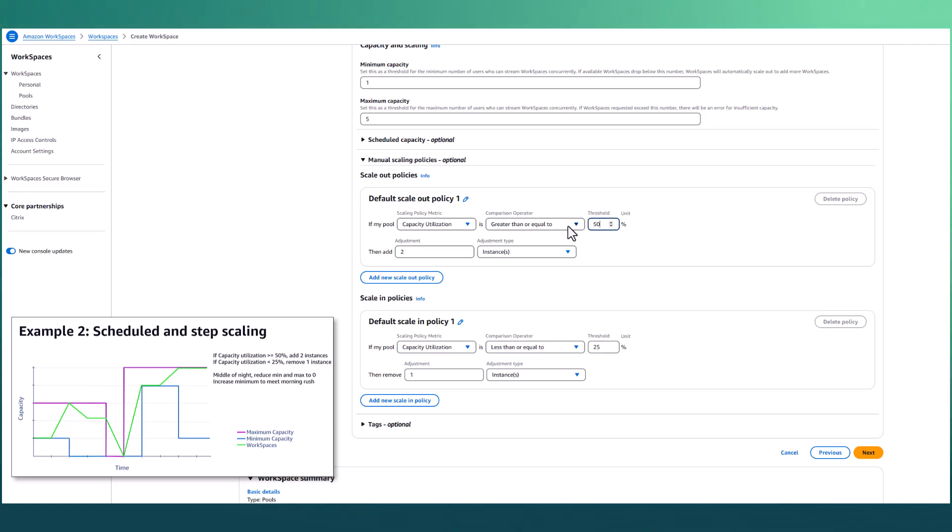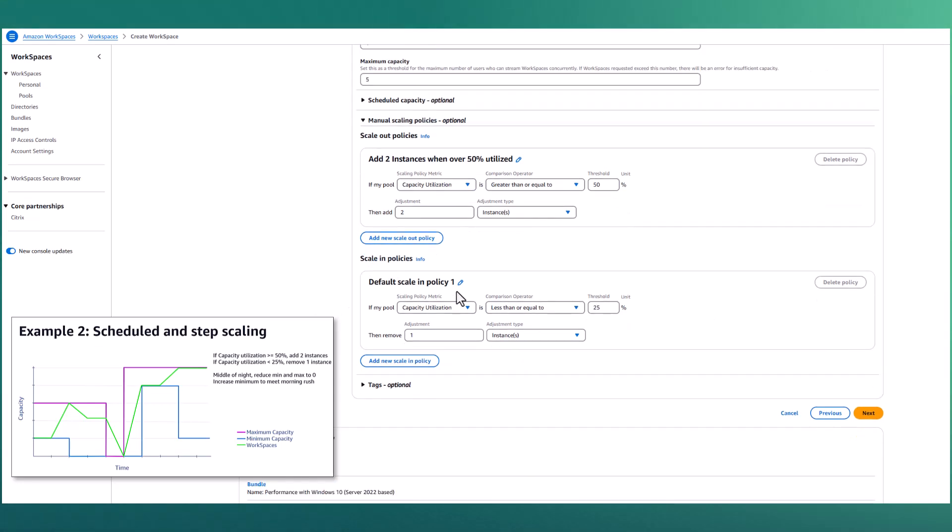The default scale-out policy will add two instances if the capacity utilization is greater than or equal to 75%. I'm going to adjust this to be 50% to match our example, and then I'm going to rename it for clarity. Remember to click on the check icon to save the rename. The default scale-in policy will remove one instance if the capacity utilization is less than or equal to 25%. Here, I'm modifying this to simply be less than to match our example. And again, I update the name and then save it. At this point, we have a simple scaling scenario in place that will scale in and out between one and five instances at all times.